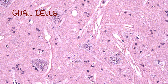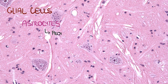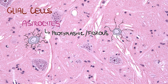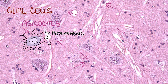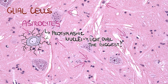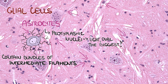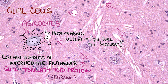Let's start with astrocytes. We distinguish protoplasmic and fibrous astrocytes. These are the nuclei of protoplasmic astrocytes in gray matter. Their nuclei are light, oval, and the biggest of all glial cells. Astrocytes contain bundles of intermediate filaments made up of glial fibrillary acidic protein, which serve as a unique marker for these glial cells in pathology. Their function is structural and metabolic support of neurons, especially at synapses.